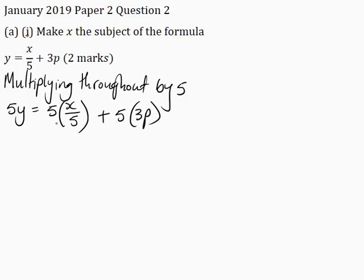This 5 here I can express as 5 over 1, because 5 divided by 1 is 5. Notice that these 5s cancel and give 1. So this becomes 5y is equal to 1 divided by 1 is 1, 1 multiplied by x is x, plus 5 multiplied by 3p is 15p.